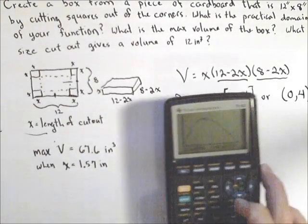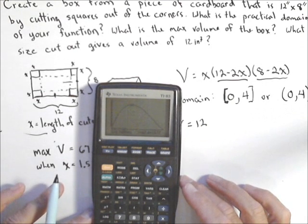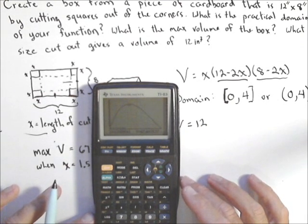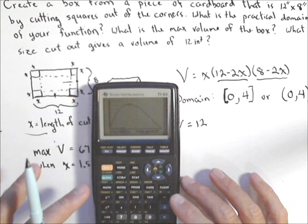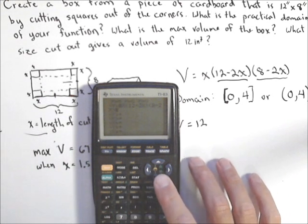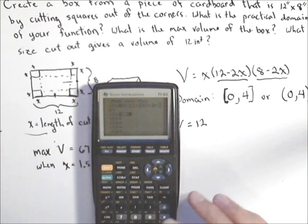Again, this is something we can do using the calculator. What I'm going to do is I'm going to put in a line any place the output is 12. So I go to my y equals, and I put in 12, and now when I graph.